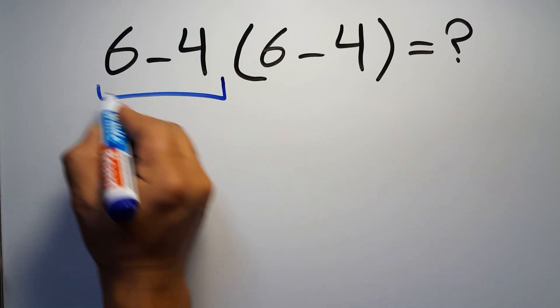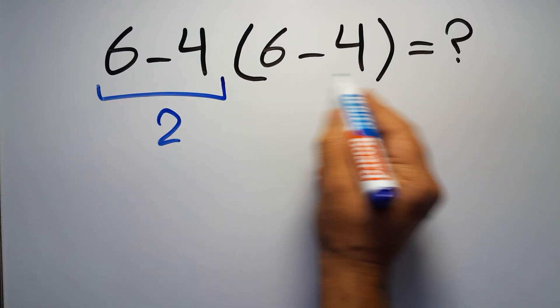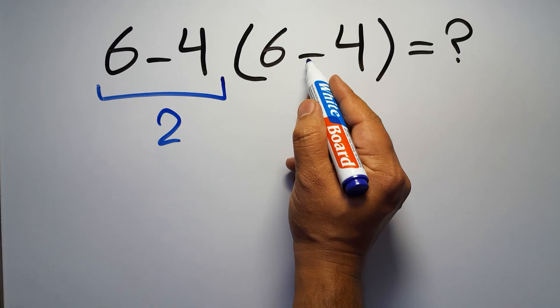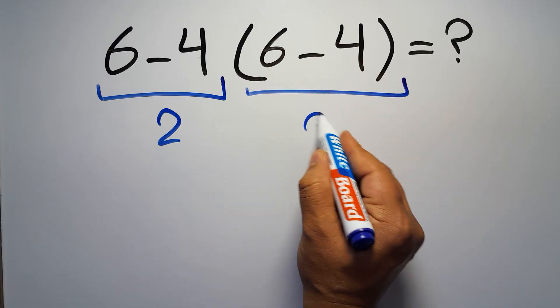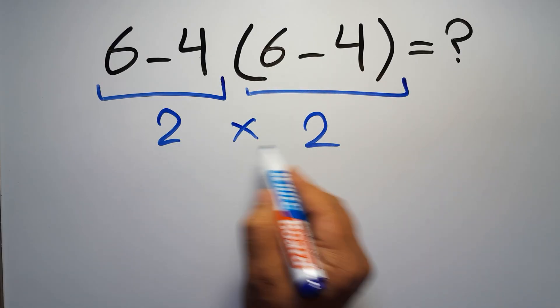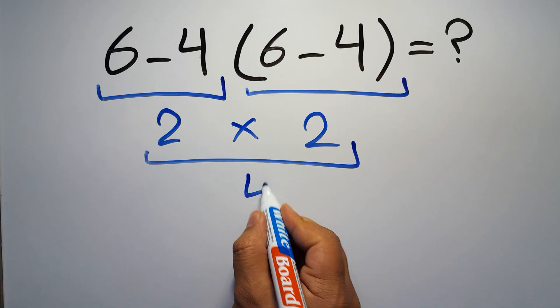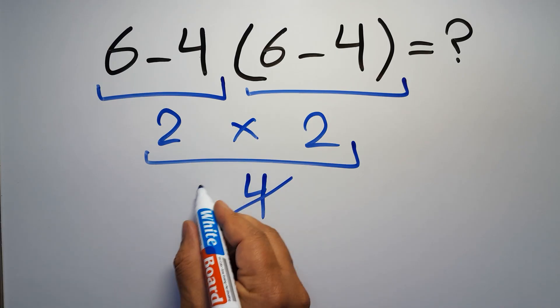6 minus 4 gives us 2, and again here inside this parentheses we have 6 minus 4, so 2 times 2, which equals 4. But this answer is not correct.